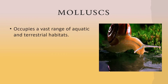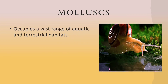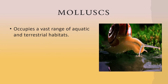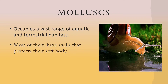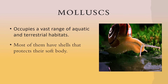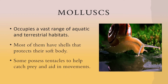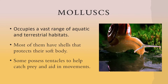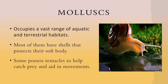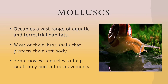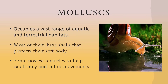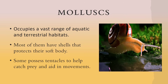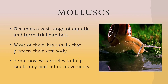Mollusks occupy a vast range of aquatic and terrestrial habitats. Most of them have shells that protect their soft bodies. Some of them possess tentacles to help catch live prey and aid their movement in the water.